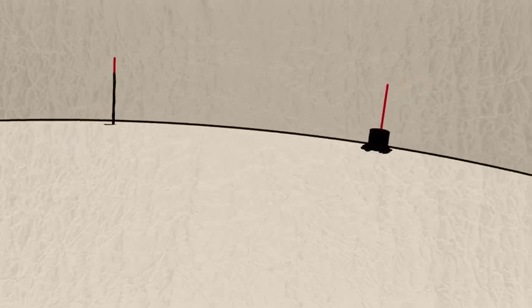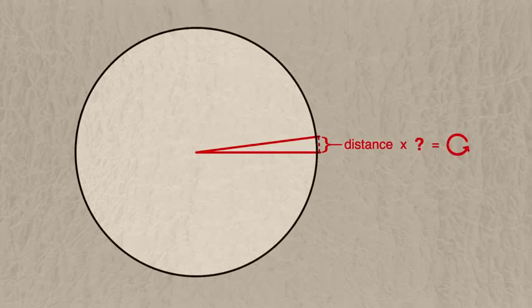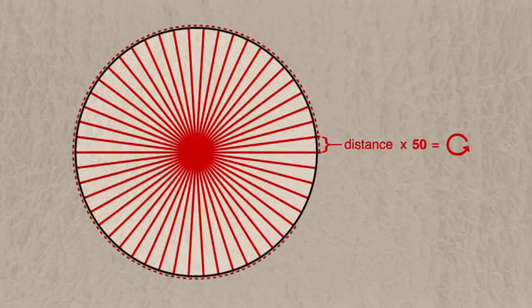Now, if you know the circumference of a circle, and you have two points on it, all you need to know is the distance between those two points, and you can extrapolate the circumference. 360 degrees divided by 7.2 equals 50. I know it's a little bit of a round number, and it makes me suspicious of this story too, but it's a good story so we'll continue with it.